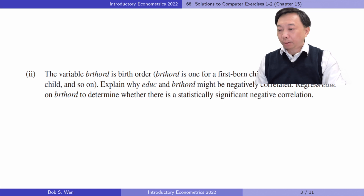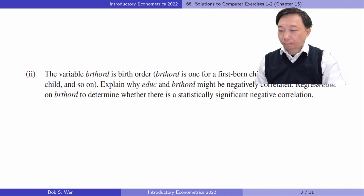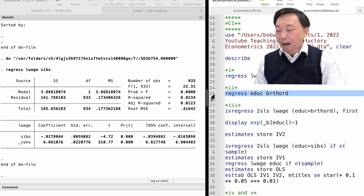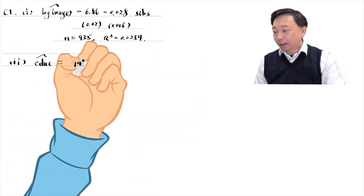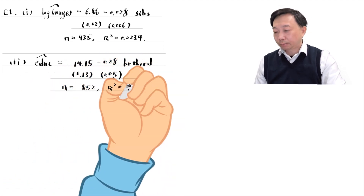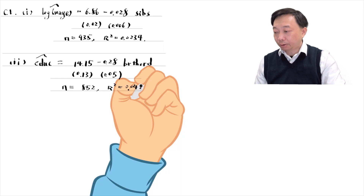In part 2, the variable birth order is birth order. Explain why education and birth order might be negatively correlated. Regress education on birth order to determine whether there is a statistically significant negative correlation. Parents may invest more in their first child's education than the second child's. The regression of education on birth order gives a slope estimate of minus 0.28, implying that the second child receives 0.28 fewer years of schooling than the first child, and it is a statistically significant negative correlation.